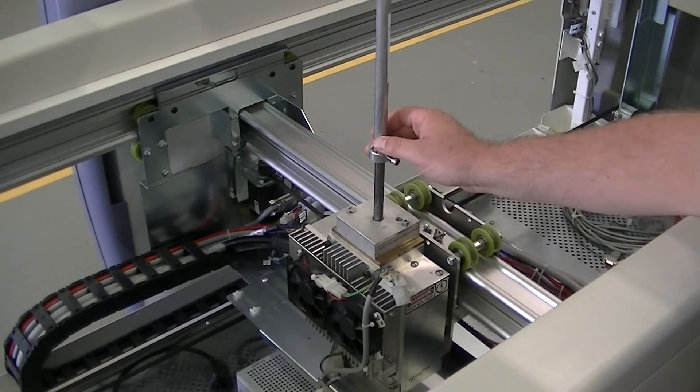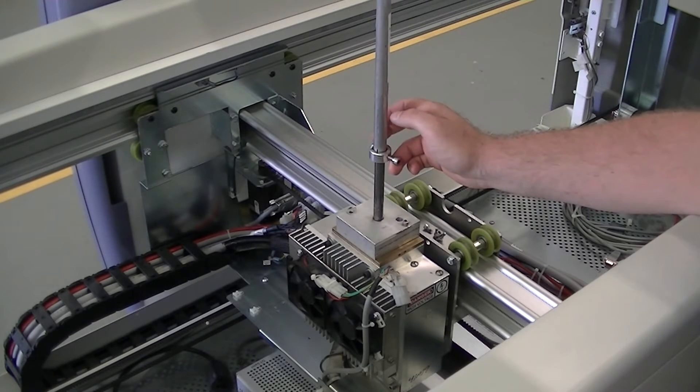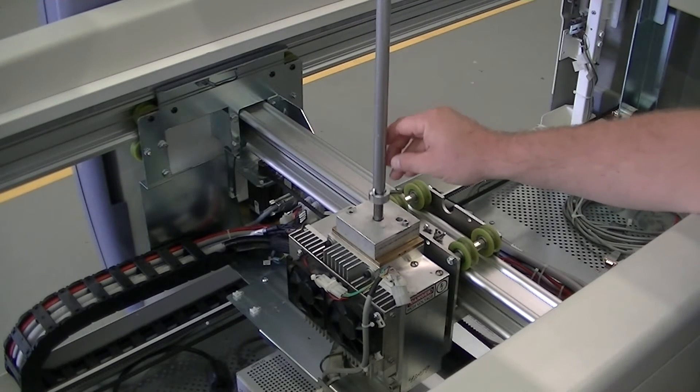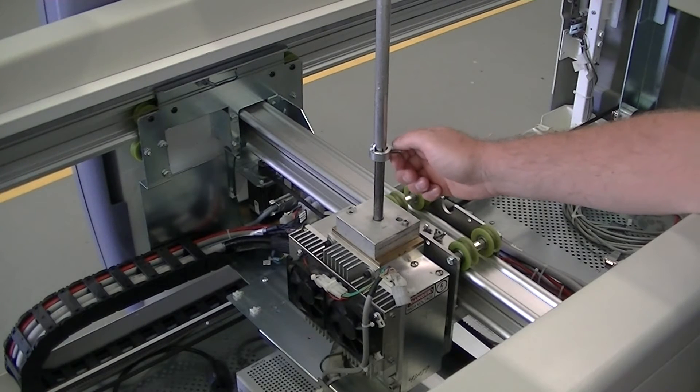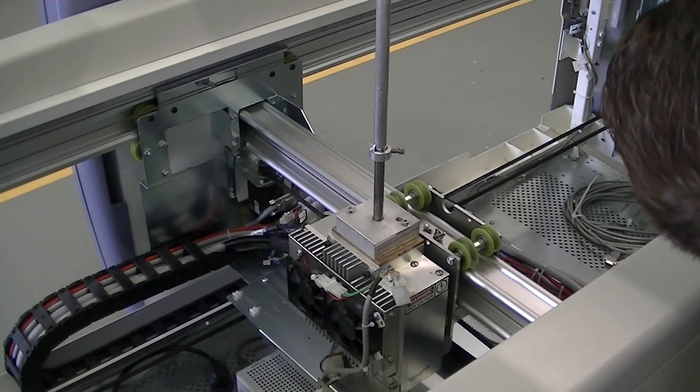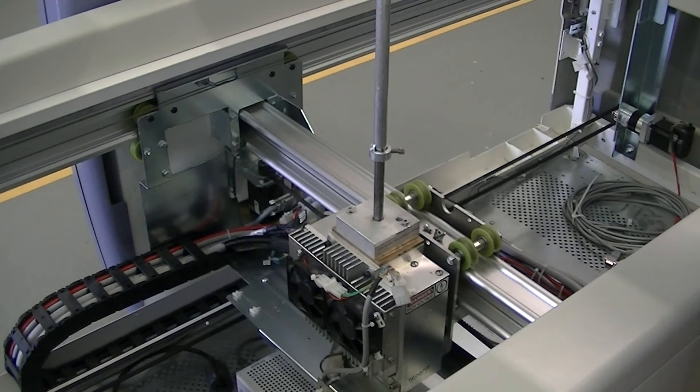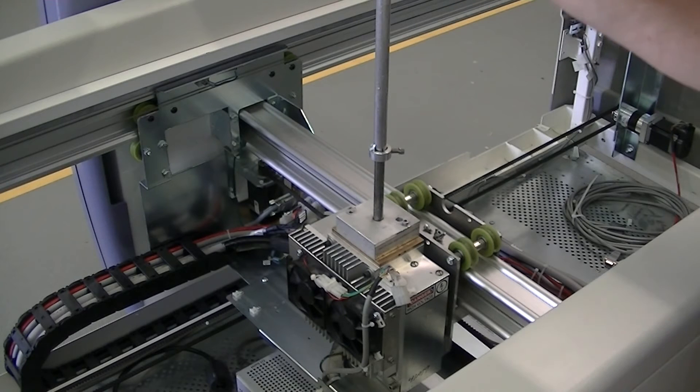From here, we want to adjust the alignment rod so it's just touching the top of the plastic. You do not want to poke through the plastic. From here, we want to verify that the alignment rod is centered on the slot of the detector, both this way and this way, which this one is.